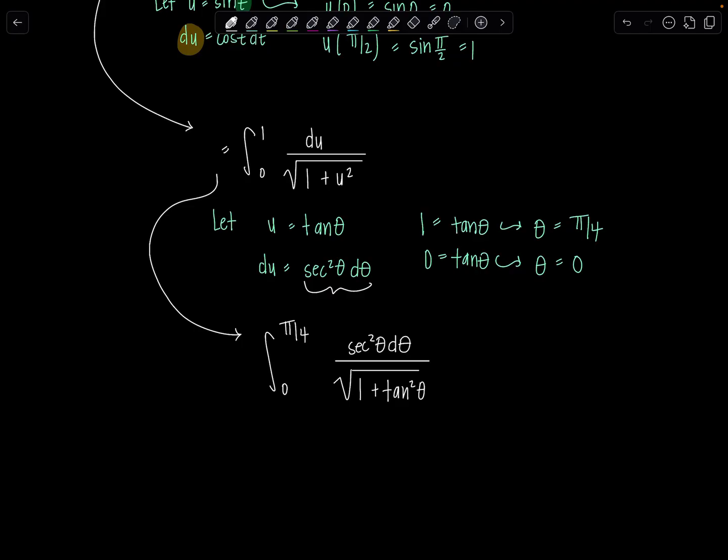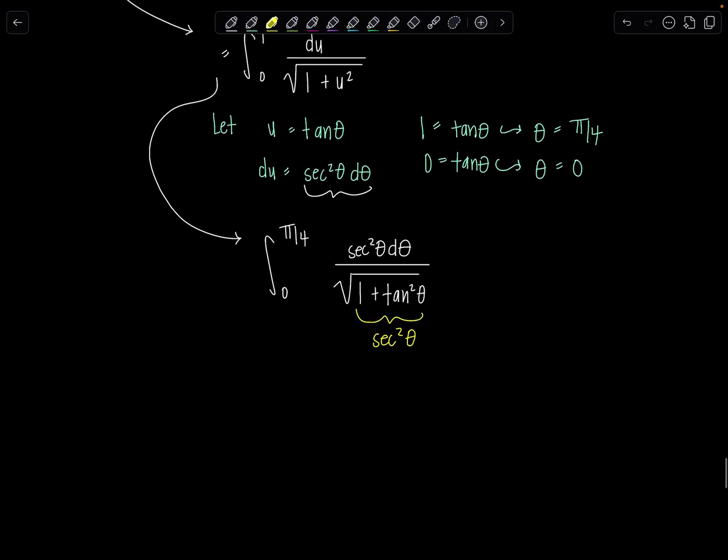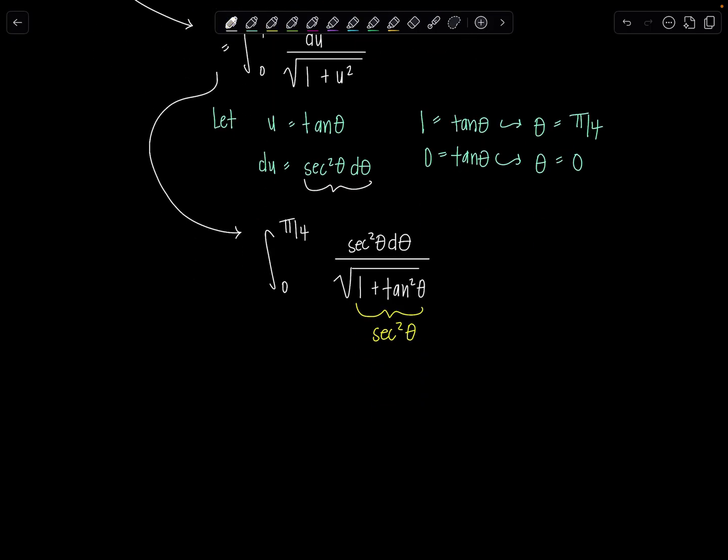And then this is where the beauty of trig sub comes in. So the whole point is we use the Pythagorean identity right here. So one plus tan squared theta that's secant squared theta. But then we have secant squared theta underneath the radical.